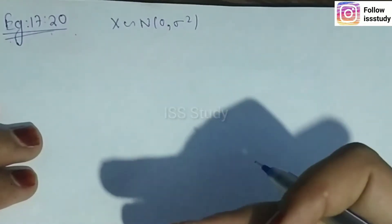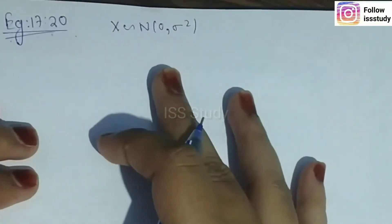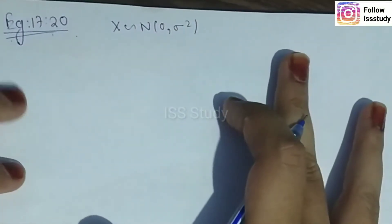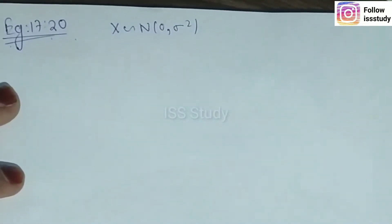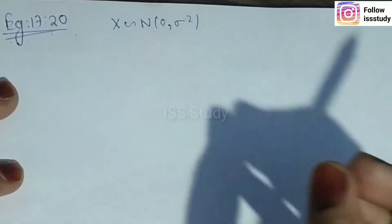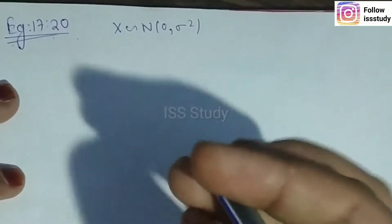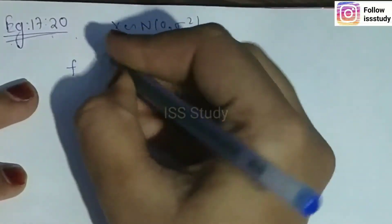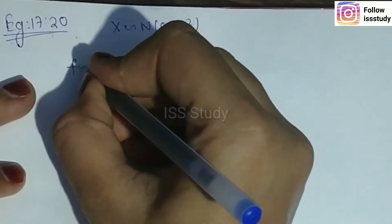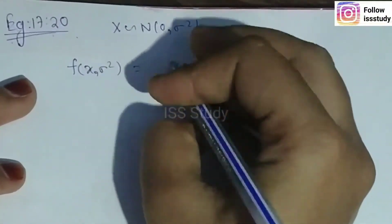We will follow the normal steps I have told you before. At the end, if the given estimator (1/n)Σxi² matches the required form, we say it is the MVB estimator; otherwise it is not. First, we write the PDF of the normal distribution — f(xi; σ²) — since the mean μ is zero.